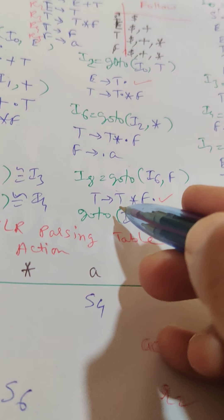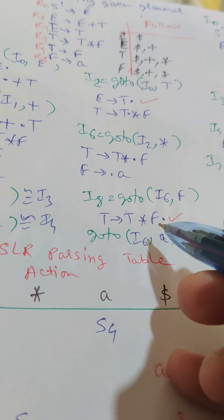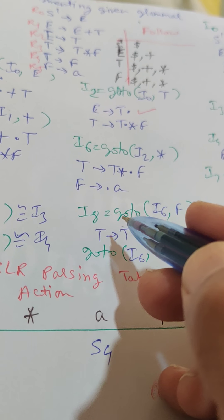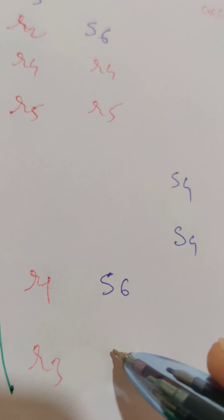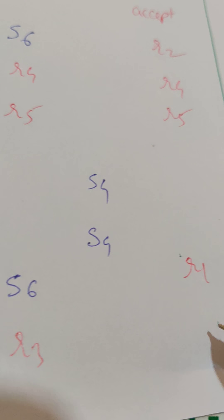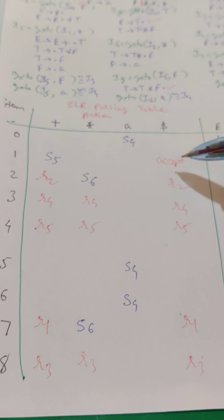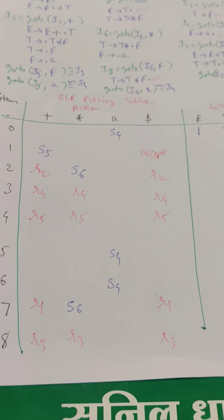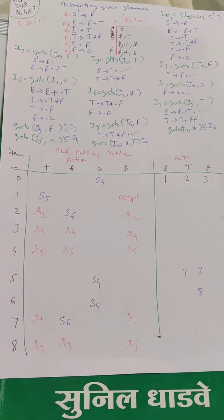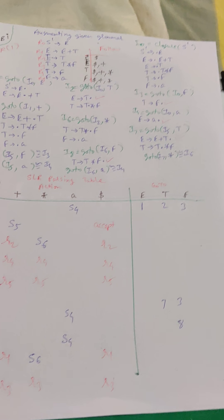I8 has T → T*F finished — rule 3 — so on FOLLOW(T) = {$, +, *} we place R3. Looking at the complete parsing table, all entries are unique — there is no shift-reduce conflict or reduce-reduce conflict anywhere. Therefore, the given grammar is SLR(1).